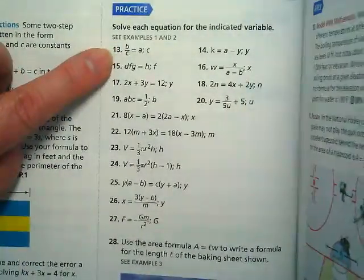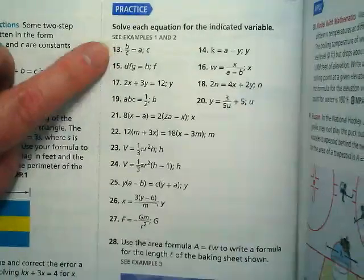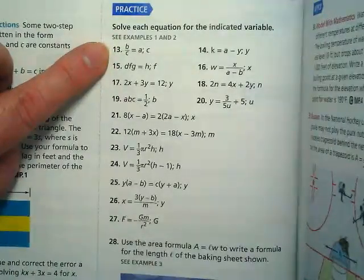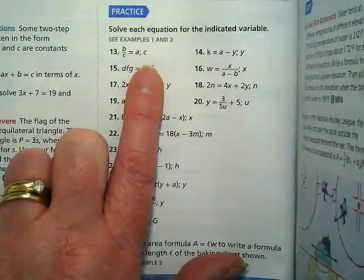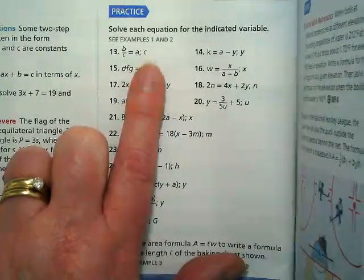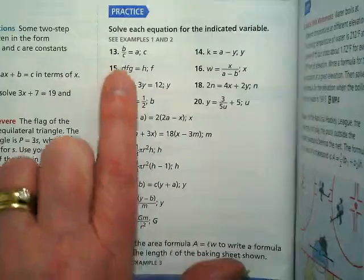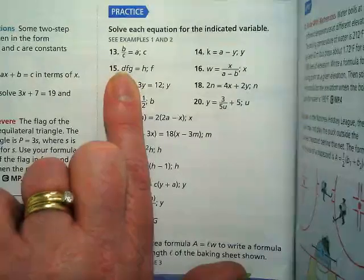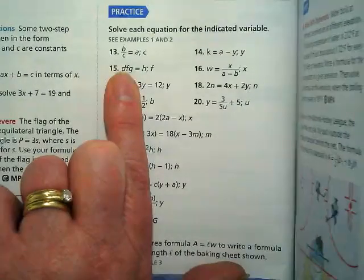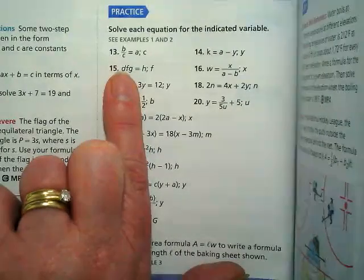We're solving each equation for the indicated variable. What variable is indicated in number 13? The C. Do you see how it's after that semicolon? That's the one that they want you to solve for. So you're going to start off with B divided by C equals A, and you're going to move stuff in the equation around so that C is by itself equal to the rest.